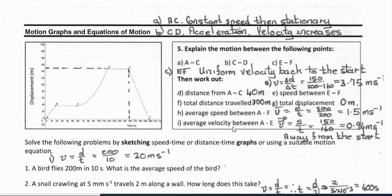With velocity, there always has to be a magnitude and a direction, so we put a direction alongside the value.